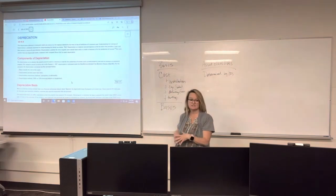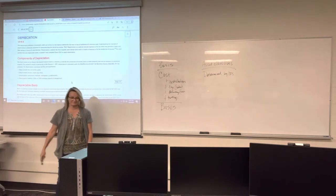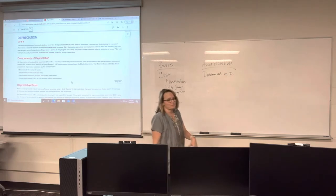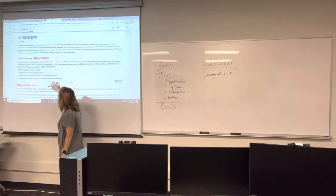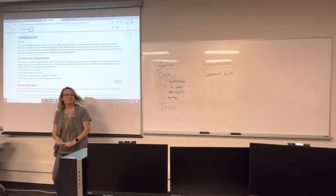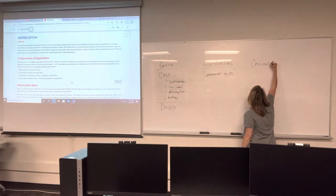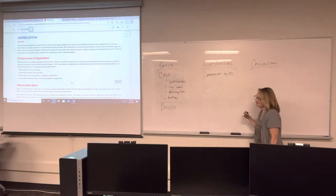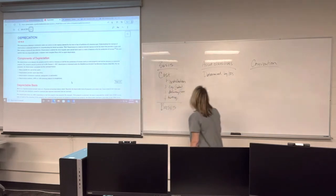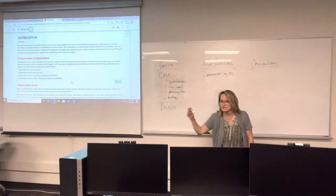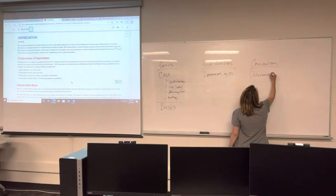It's kind of nice — it takes away a lot of decision making because it just is what it is. The third component is depreciation convention. This is completely different from anything in financial accounting — it's a completely new concept. Depreciation convention determines when we start depreciating an asset.